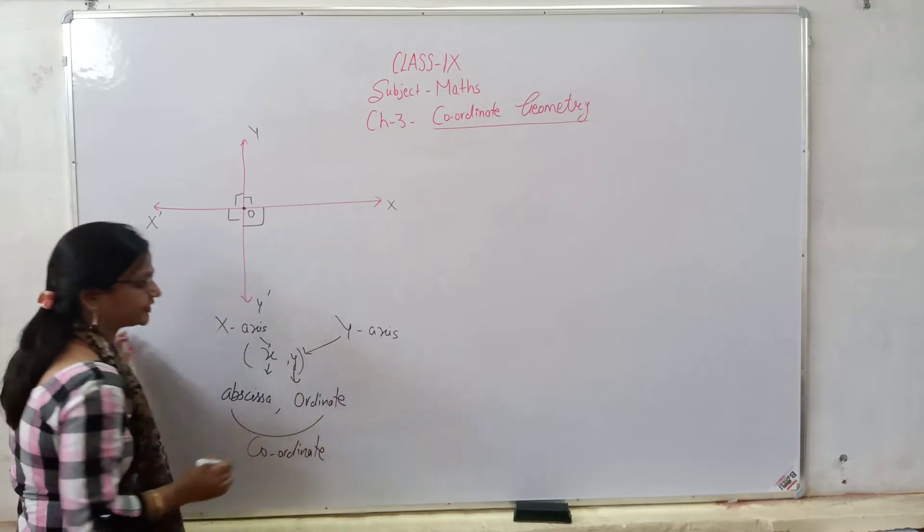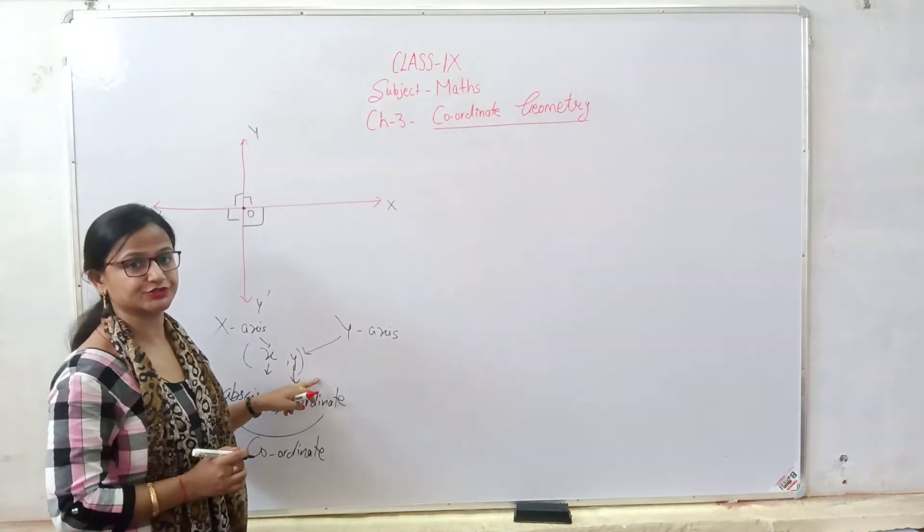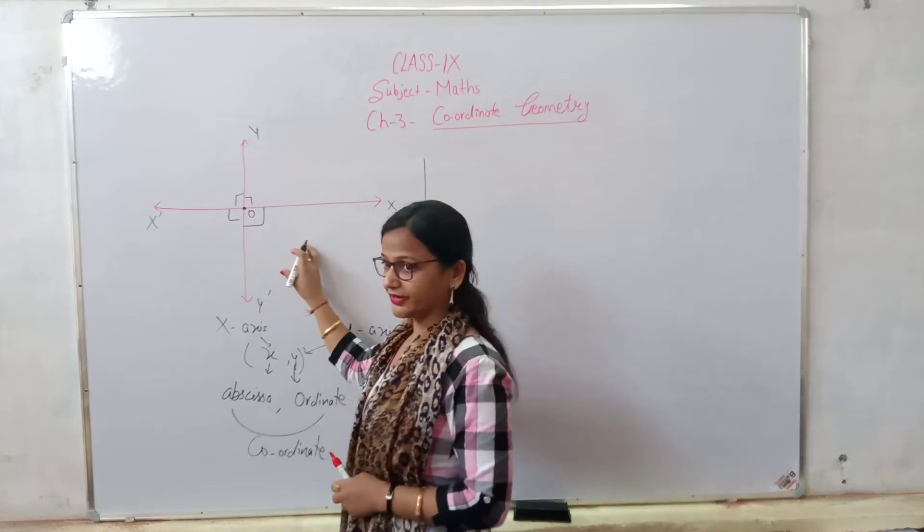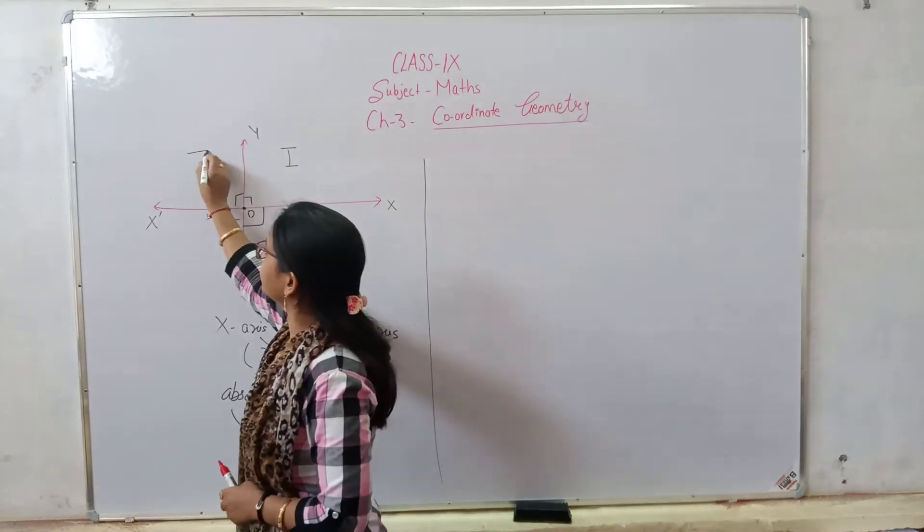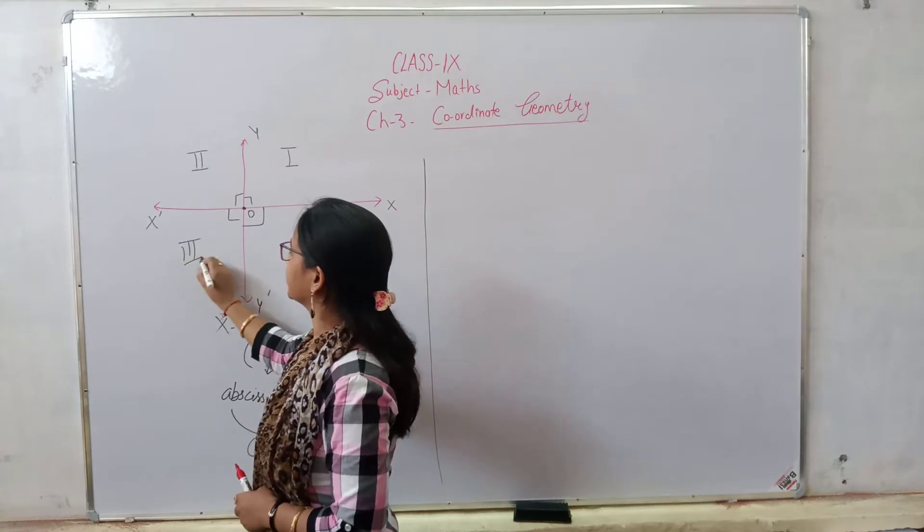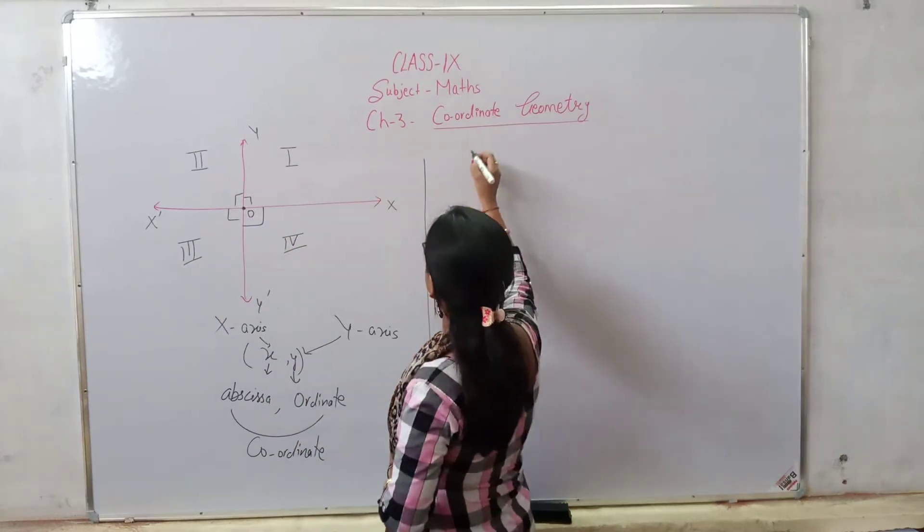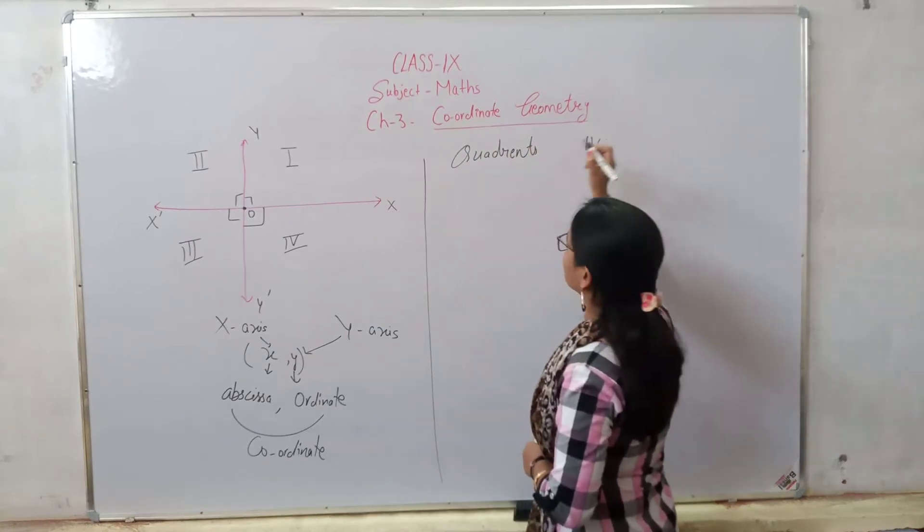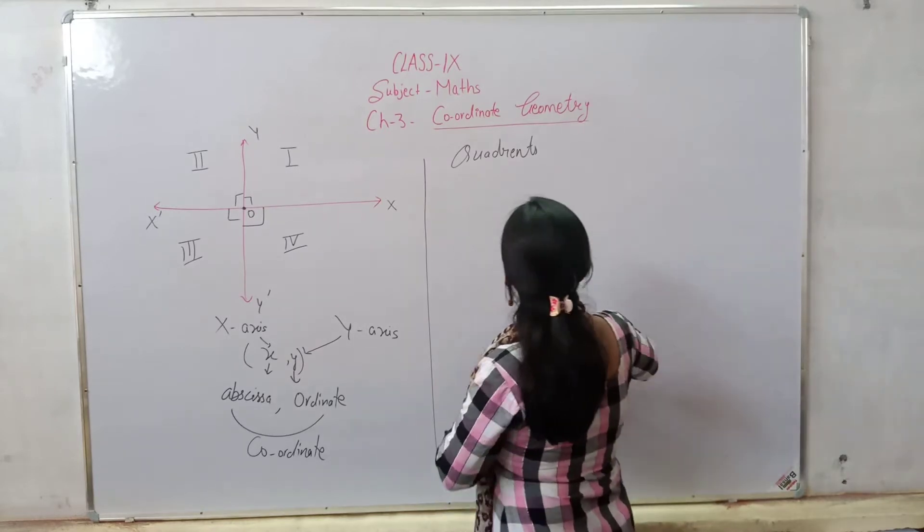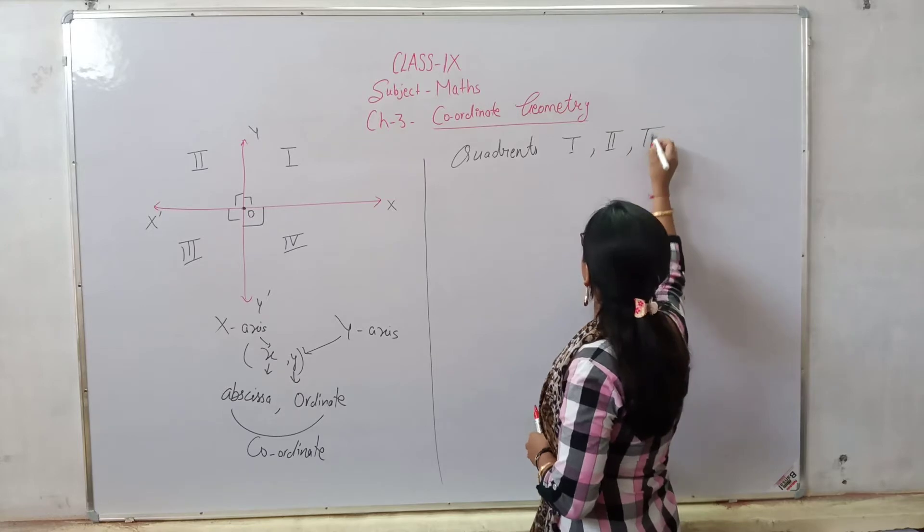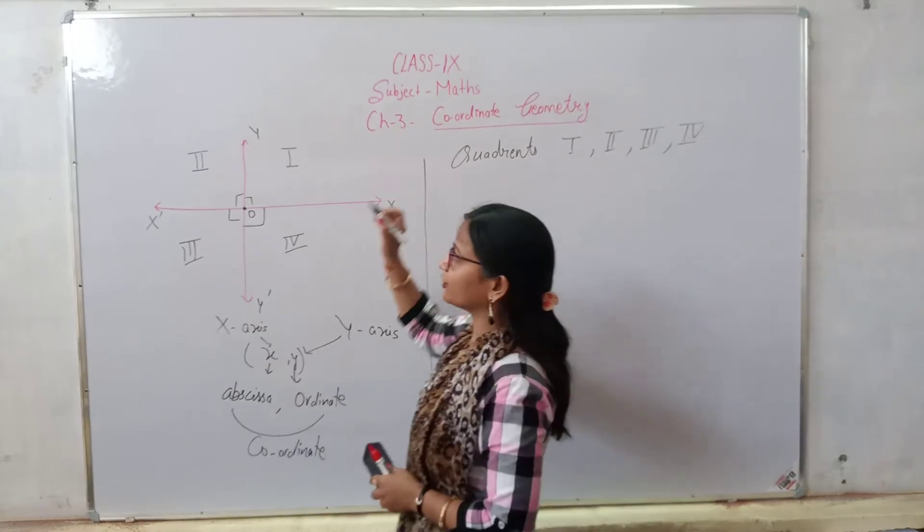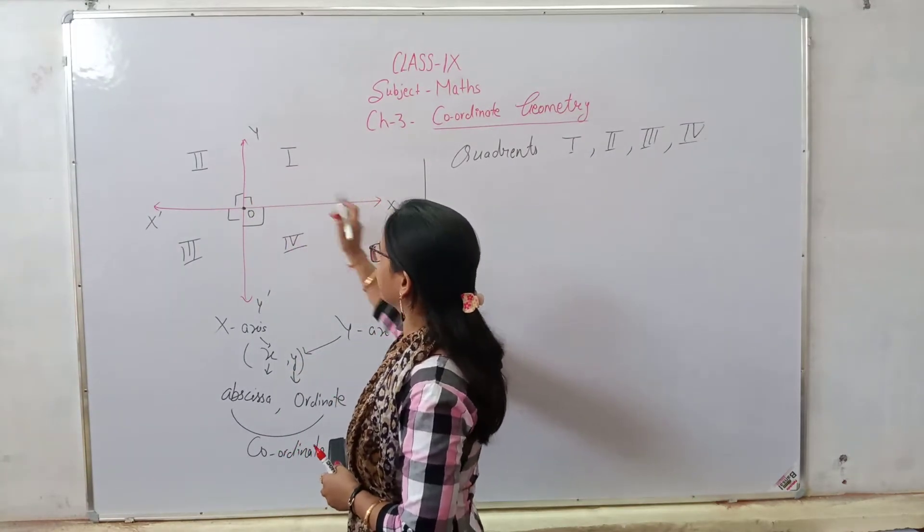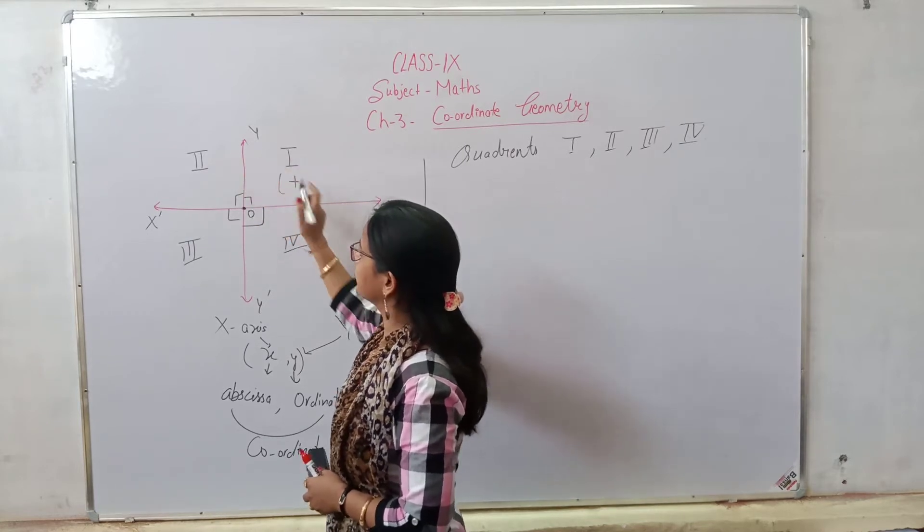The next case - these four parts are divided. This is the first quadrant, second quadrant, third quadrant and fourth quadrant. So how many quadrants are there? Four quadrants. This is the first quadrant, where x is positive and y is positive.